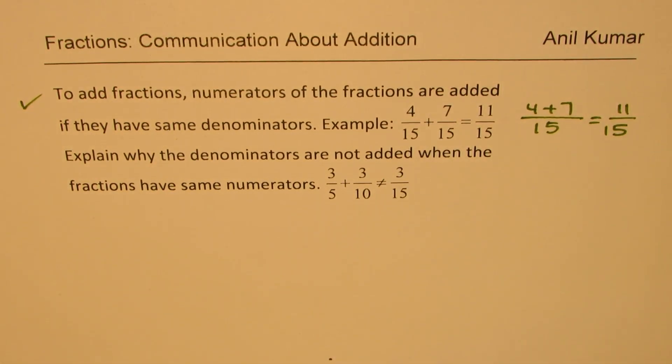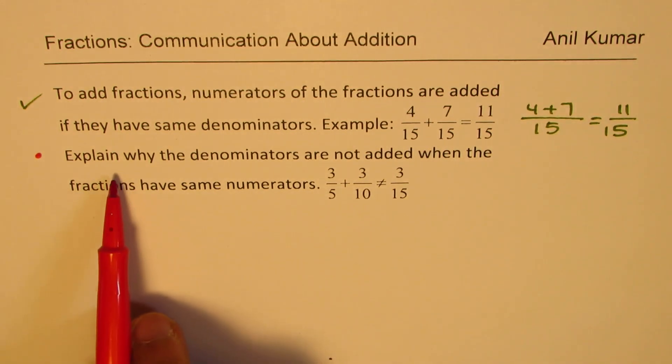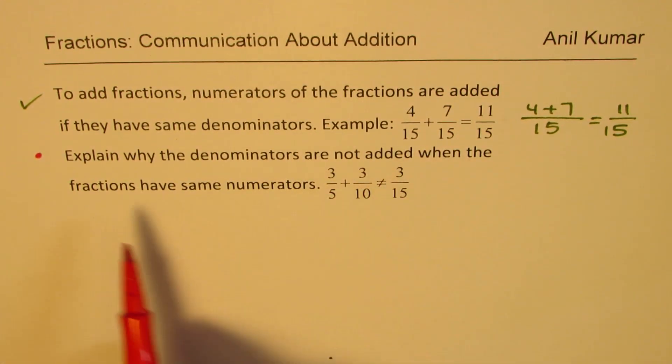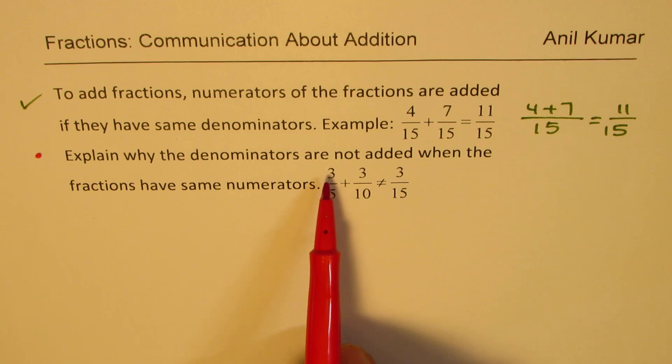Now the question comes that we need to explain why the denominators are not added when the fraction has the same numerator. For example, 3 over 5 plus 3 over 10. We see 3 and 3, same numerator, but we are not adding denominators.